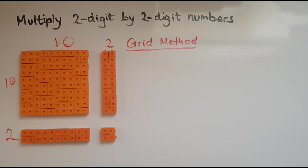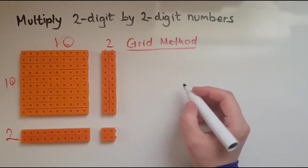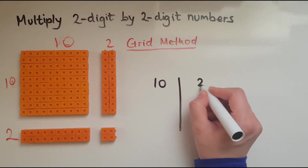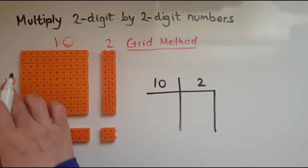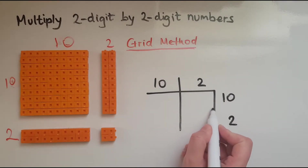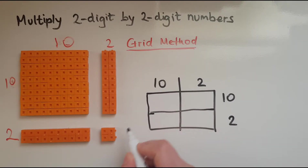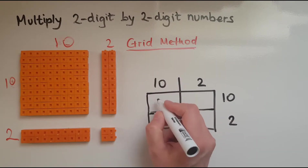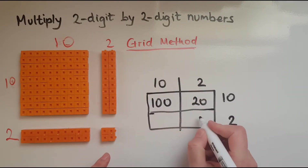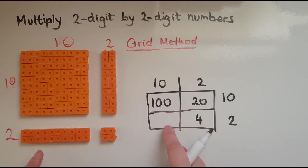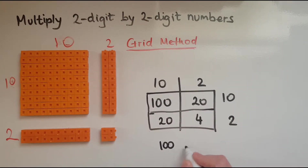So using the grid method: 12 is made with 10 and 2, and the other 12 is made with 10 and 2. So 10 times 10 is 100. 2 times 10 is 20, and 2 times 2 is 4. 10 times 2 is again 20. So altogether we've got 100 + 20 + 20 + 4 = 144.